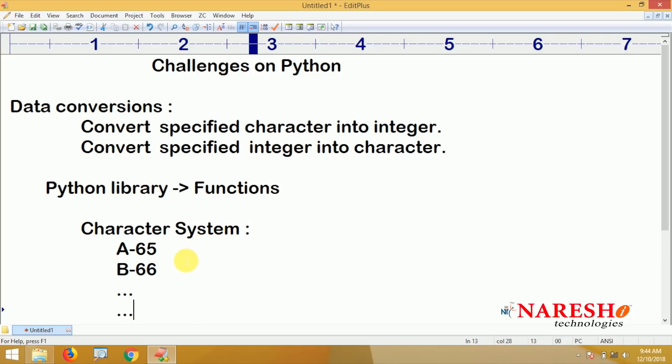In the same way, small a is 97, small b is 98. These are fixed values, standard values. Even for digits, 0 is 48, 1 is 49.